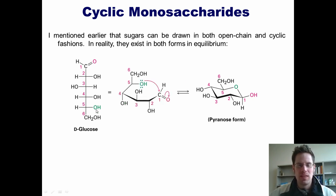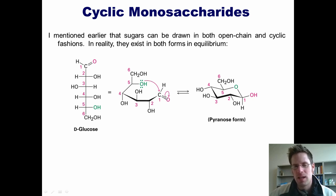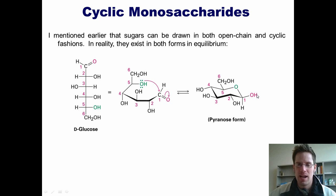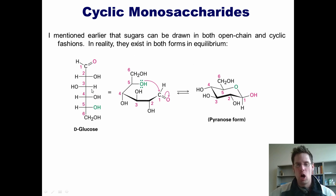Imagine that the green OH coming off of carbon 5 in glucose is the same green OH over here. If I draw glucose in this semi-ring form, you imagine this green OH closing on the carbonyl carbon, then the electrons being thrust up onto the oxygen, and the resulting O- stealing back this hydrogen from this OH. When it does that, it forms the ring structure shown here to the right.